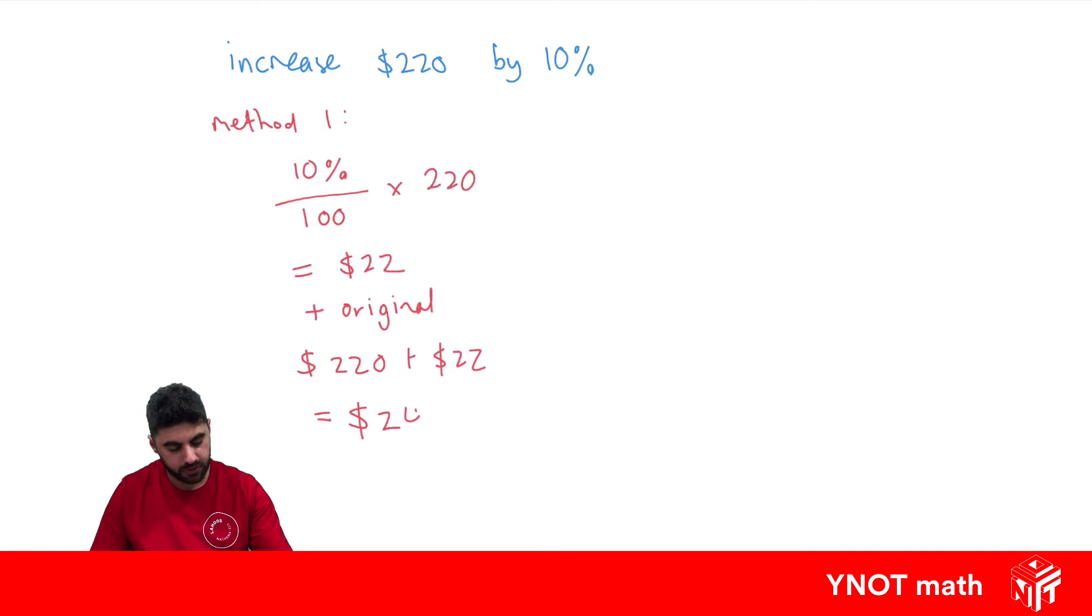Let's look at method two. This is the method I use personally. If you want to increase something by 10%, we take 10% and add 100%, so we really want to find 110% of 220. Then we do 110 over 100 times 220, and straight away that gives us $242.